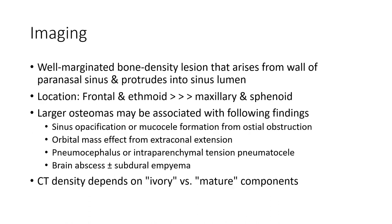Osteomas appear as well-marginated bone density lesions that arise from the wall of the paranasal sinus and protrude into the sinus lumen. The most common locations are the frontal and ethmoid sinuses, followed by the maxillary and sphenoid sinuses.